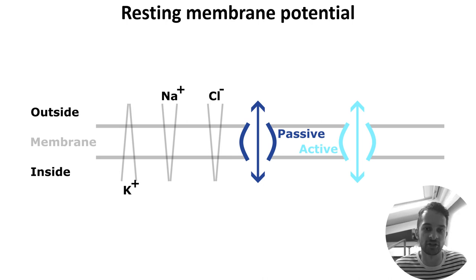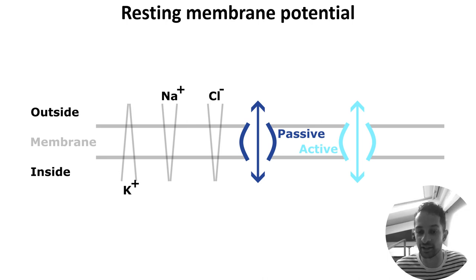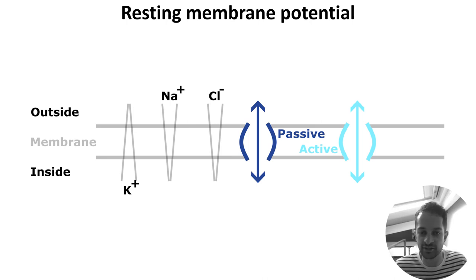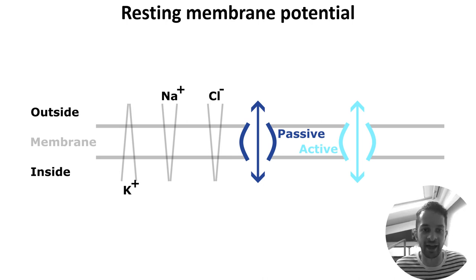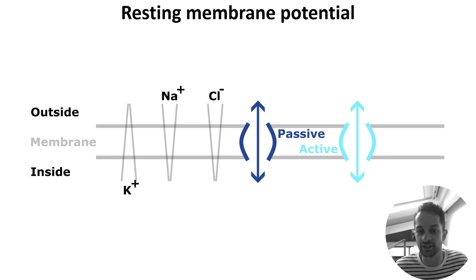Some of these channels are passive, so simply allow ions to diffuse across, but others are active and use energy to transport ions against their gradients. The overall result of these ionic movements is that each ion balances at an equilibrium where its concentration gradient equals its electrostatic gradient. This is known as the ion's equilibrium or Nernst potential. The resting potential of the membrane is the sum of all of the ions' equilibrium potentials, which is usually somewhere around minus 70 millivolts.